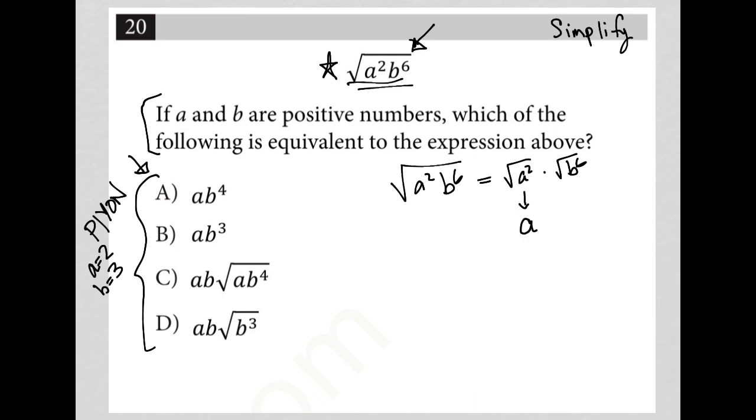So, the square root of A squared is A. The square root of B to the 6 is B to the 3rd. And therefore, the correct answer here is choice B.